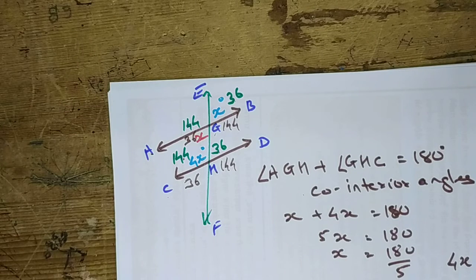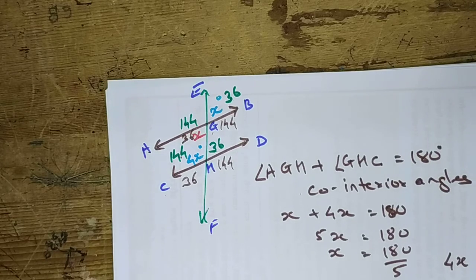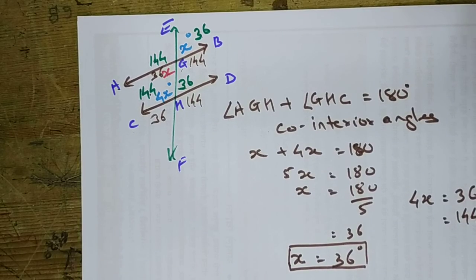So by finding the measure of only 2 angles, we can get all the angles. We can easily find out the value of X and also the given angles.